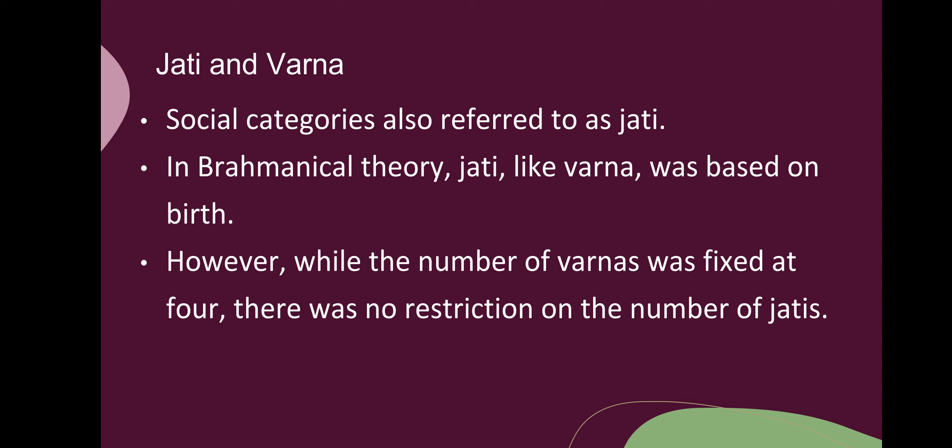As we discussed earlier about the varna system, let's now understand jati and varna. Social categories also referred to as jati. In brahmanical theory, jati like varna was based on birth. However, while the number of varnas was fixed at four, there was no restriction on the number of jatis.